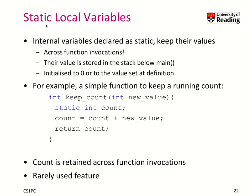You can also have static local variables internal to a function. Here we have an example with keep_count where we can give it a new value — this is the internal count variable declared as static. That means it exists in memory but is never removed; its lifetime is the entire program. We can use it to memorize information — here we use it to increment count, adding a new value each time the function is called, so it remembers the total sum. It is also initialized to zero or to the value set when you define it. It is a rarely used feature, and it makes functions impure because it introduces a side effect.